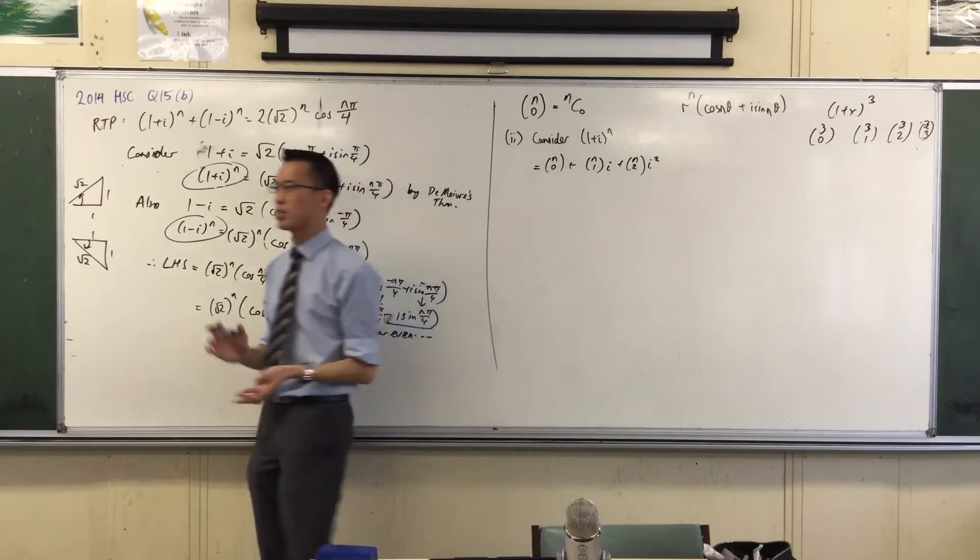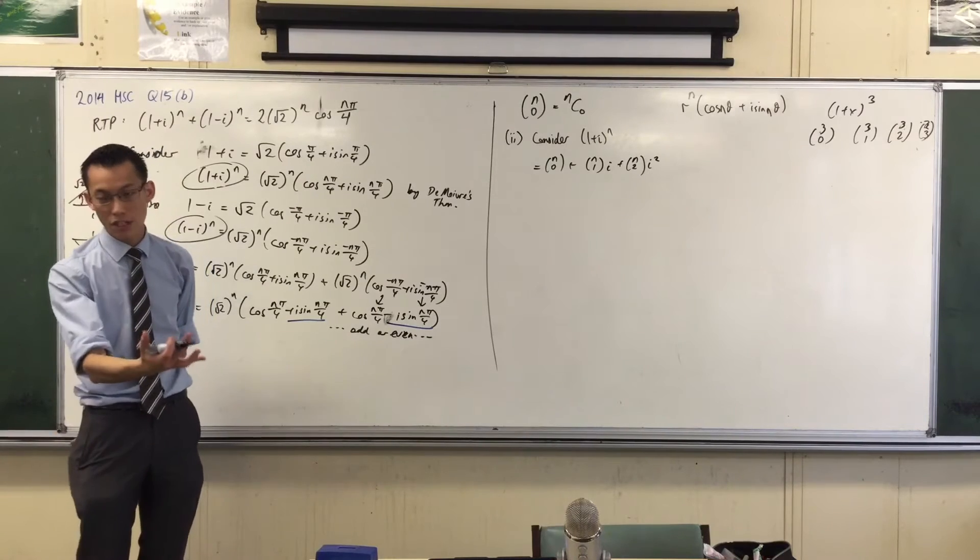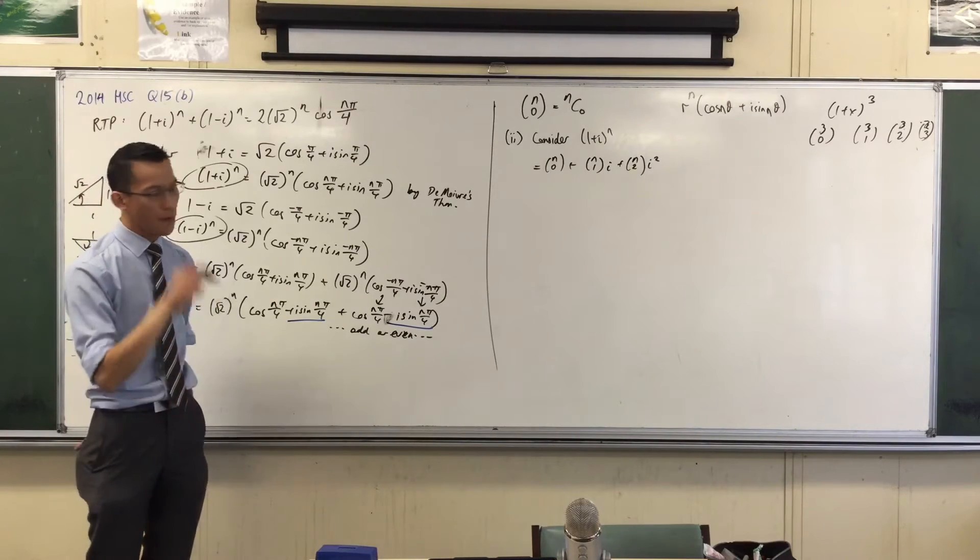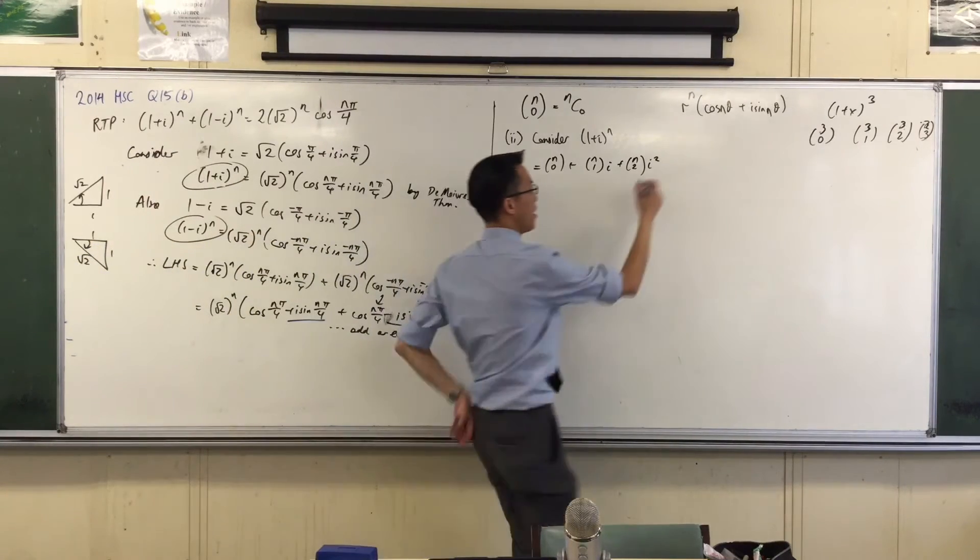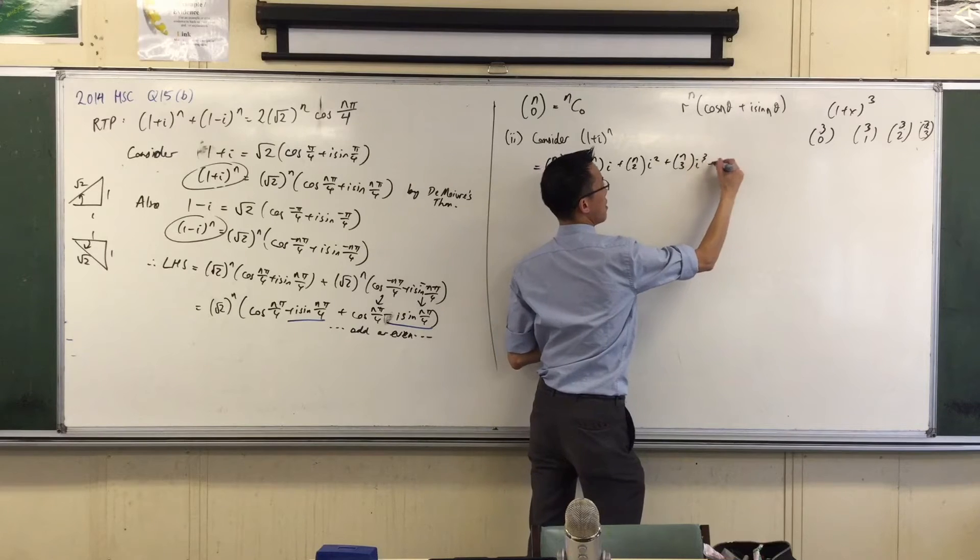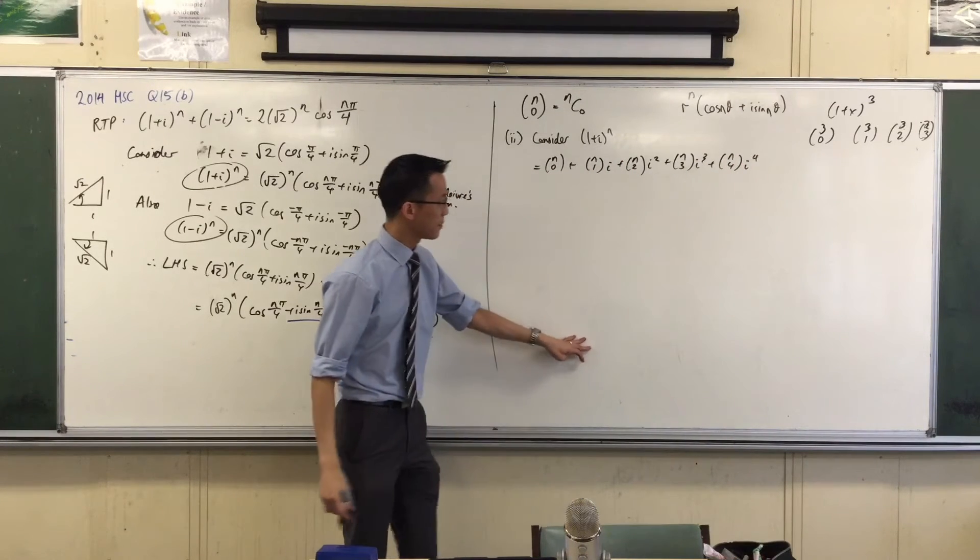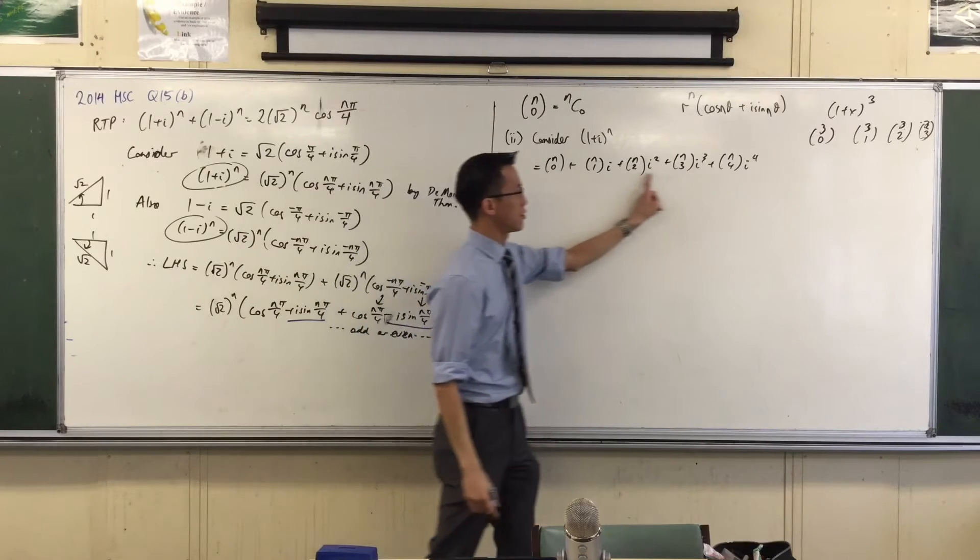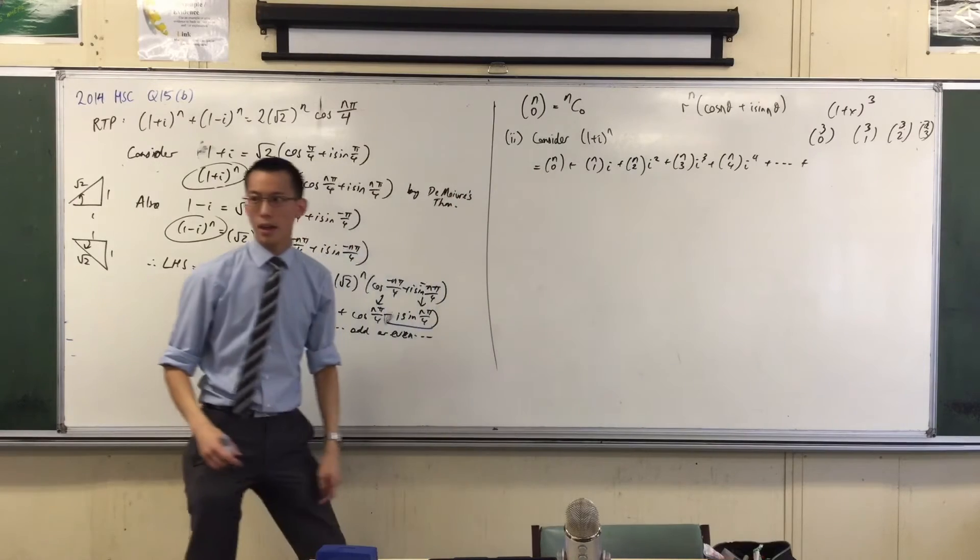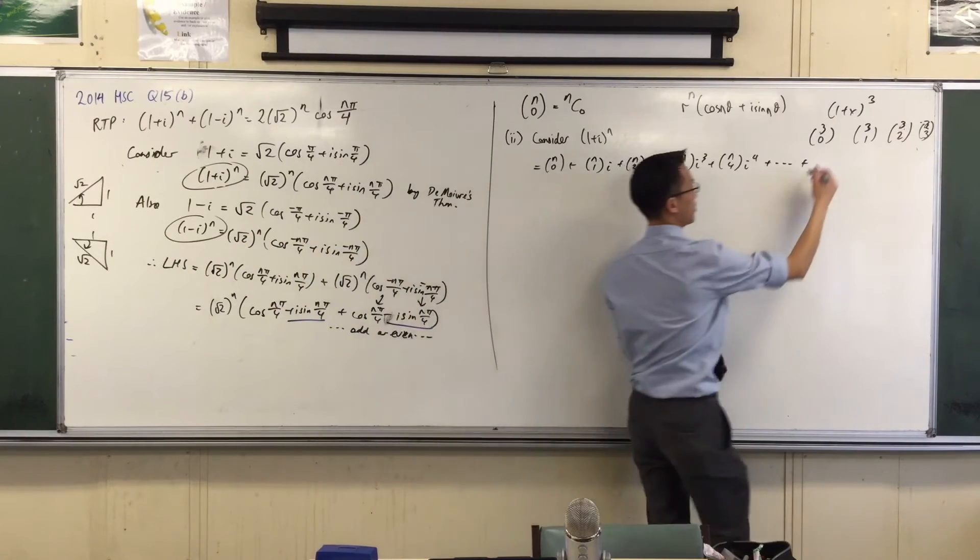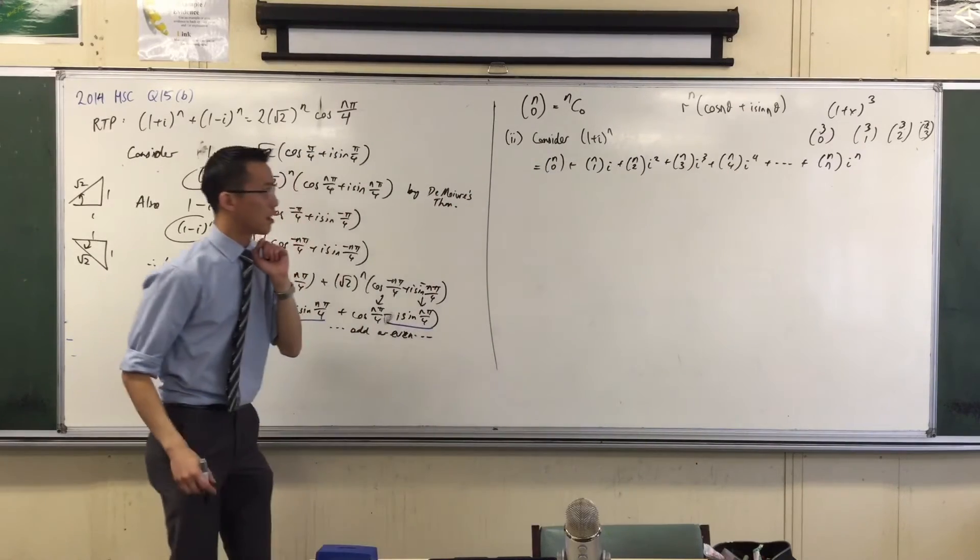Okay, now usually to establish a pattern, three terms is enough, right? Like if you get three terms of an AP or a GP, I know everything about this now, okay? For reasons that will become clear shortly, I'm going to put a couple of extra terms on. I'm going to go n3 and n4. I think that will be enough for me. Now, this is the first five terms. What's the last term?